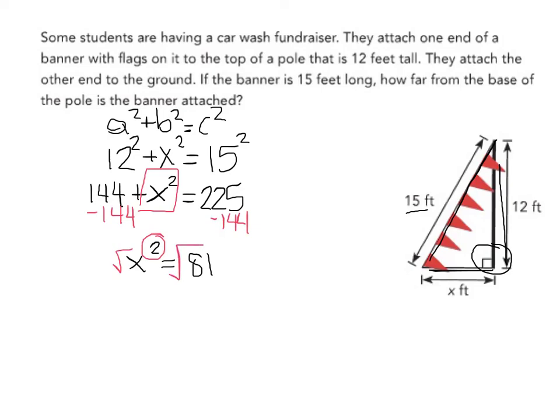So I have x equals, and the square root of 81 is 9. So the distance between the banner here and the base of the pole equals 9 feet.